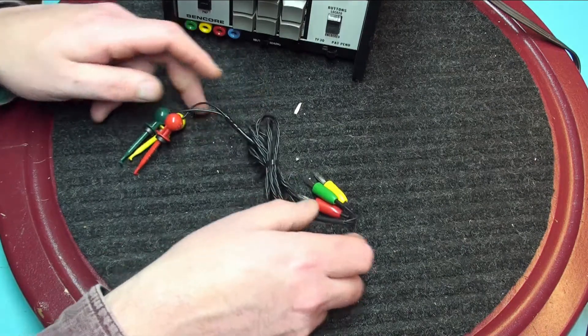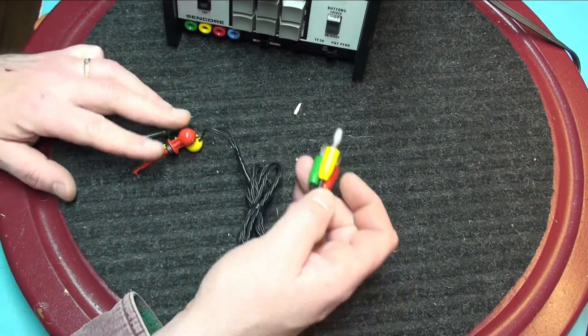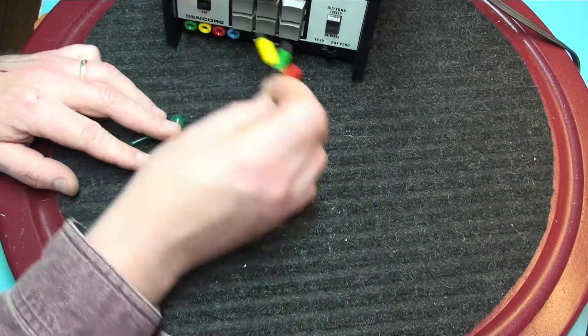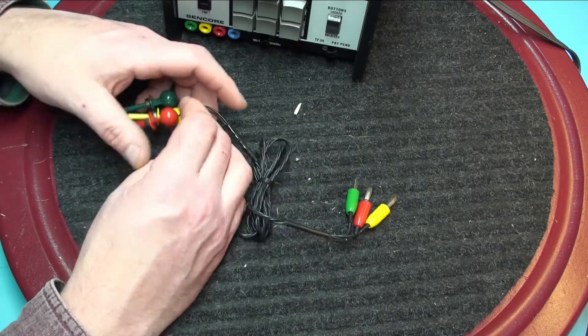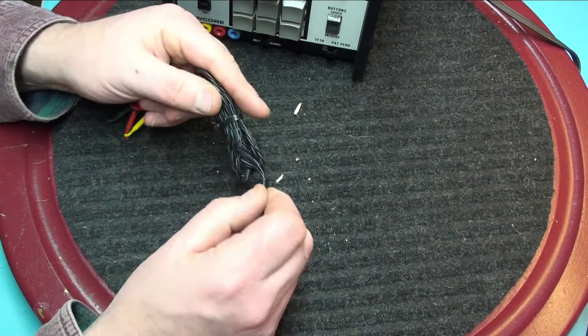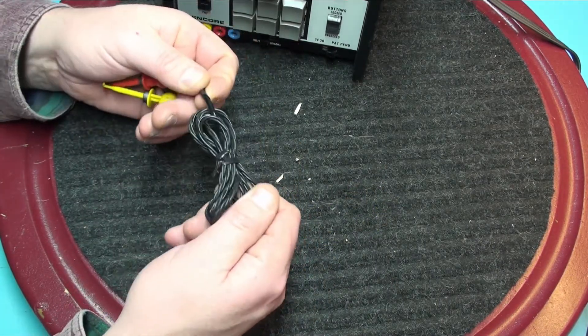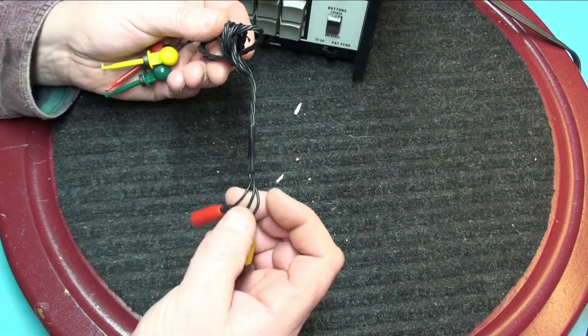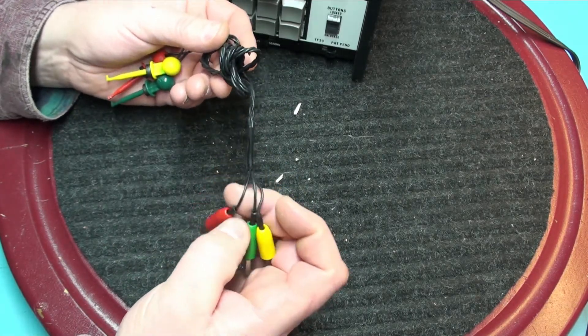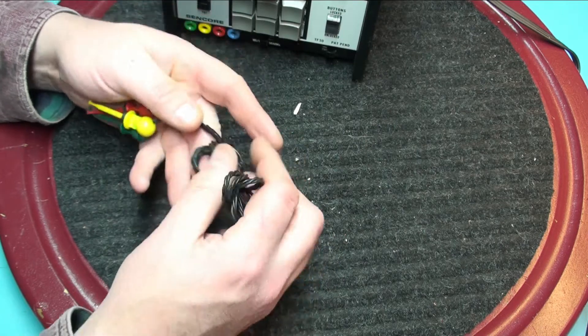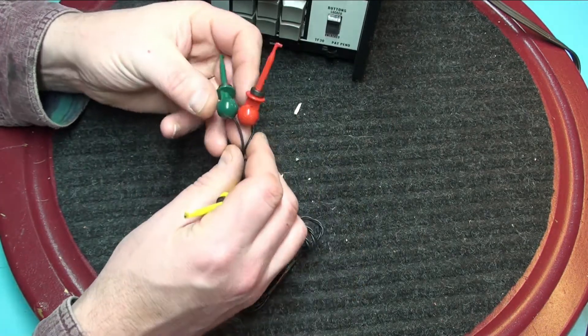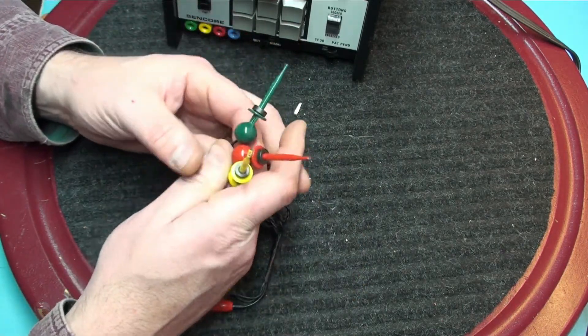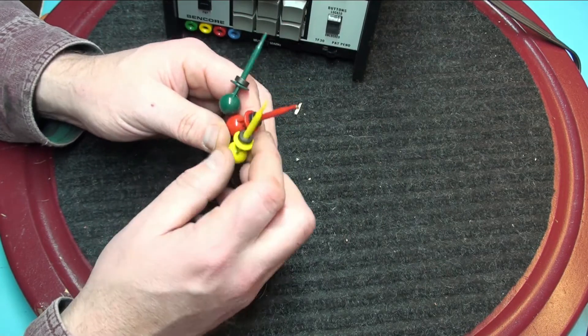Here are the test leads that come with it. These are original to the set, corresponding colors. The cable is pliable, in great shape. There's no nicks or frayed ends. The grabbers have all their magnets. A lot of times these end up missing.